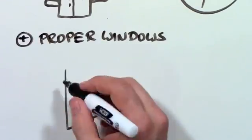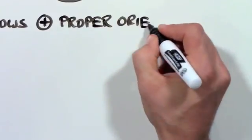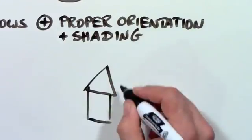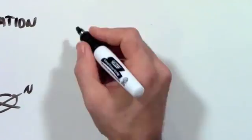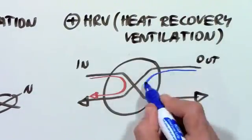Plus, the house needs proper windows most of the time with triple pane glass. It needs to be oriented properly so the sun can heat it in the winter and shade is provided in the summer. And it uses an HRV, a device that provides the inside with fresh air without letting the heat out.